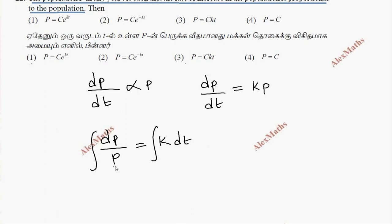We will integrate. So log p equals k times t, where k is a constant. Integration of dt gives t, plus integration constant log c.